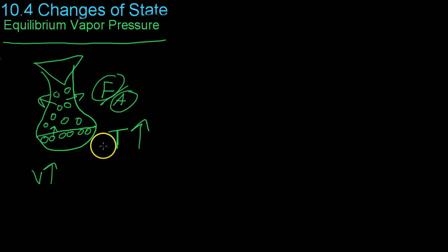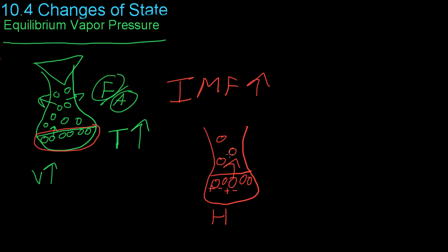The second thing that vapor pressure depends on is the intermolecular forces of the actual liquid contained right here. Because if there are high intermolecular forces, like in a molten ionic compound, where each one of these molecules has a positive and negative charge, and they're held together in an orderly arrangement, it's going to be very hard for one of them to gain enough energy to overcome these charges and escape. So you're only going to have a few molecules up here.